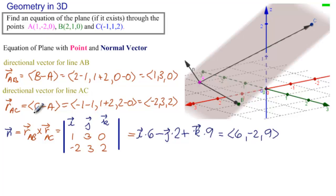Now we have our point. We can use A. We know our formula is this, so we have A is 6 times X minus 1 plus B is minus 2 times Y minus minus 2, so plus 2, plus 9 times Z minus 0, equals 0.